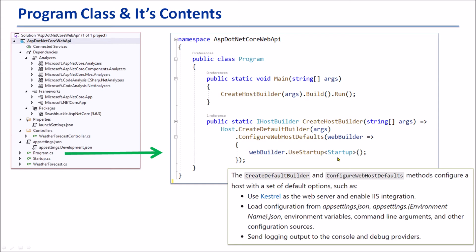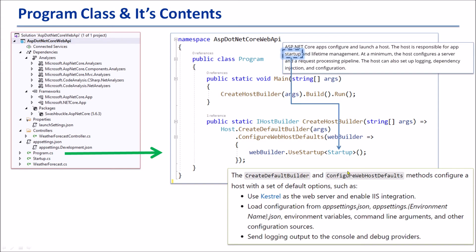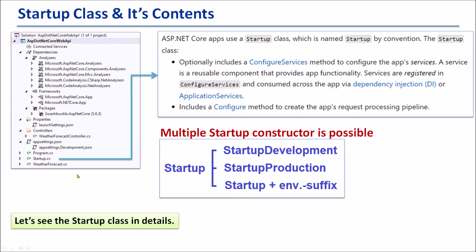Now let's look at the Startup class. ASP.NET Core apps configure and launch a host. The host is responsible for app startup and lifetime management. At a minimum, the host configures a server and a request processing pipeline. The host can also set up logging, dependency injection, and configuration. All of these procedures are managed inside the Startup class.